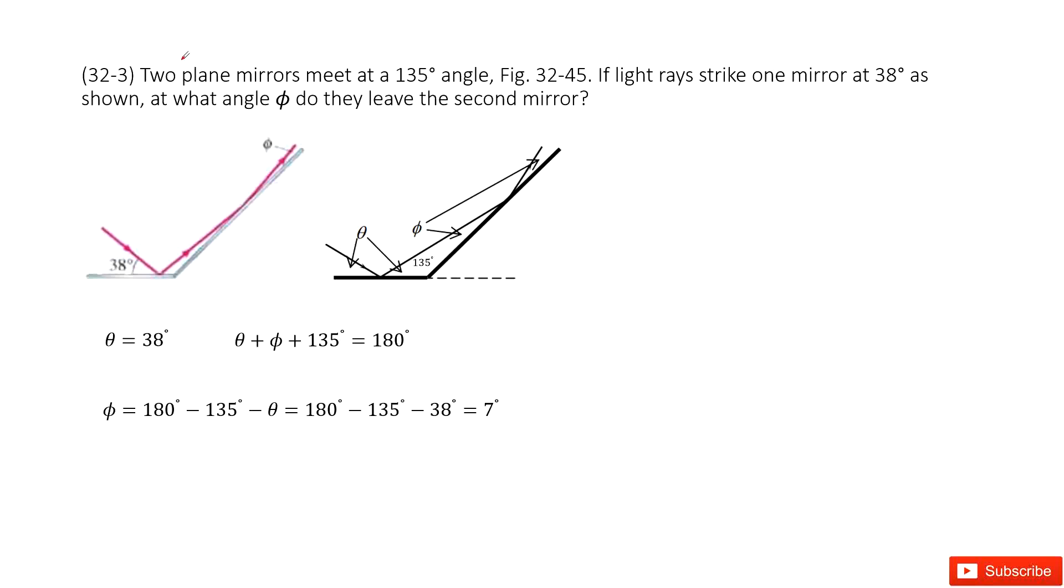We can see we have two plane mirrors. They meet at a 135 degree angle. So we can draw it, 135 degrees.